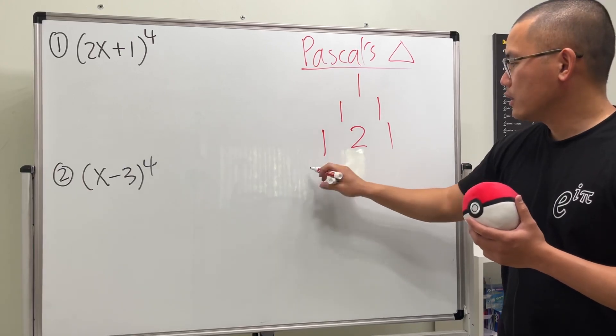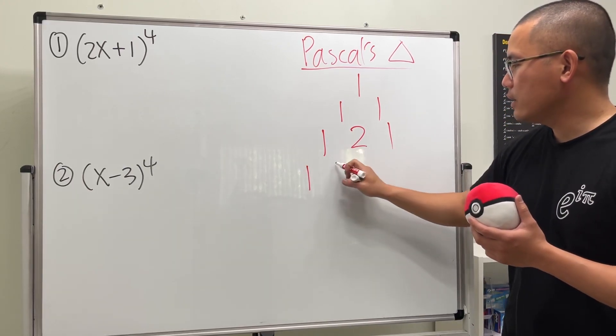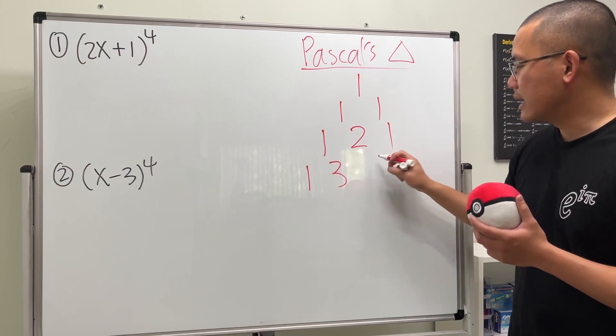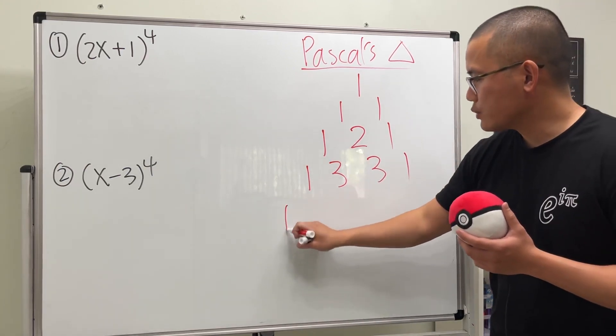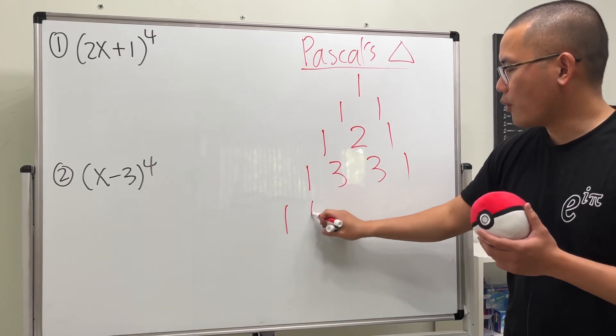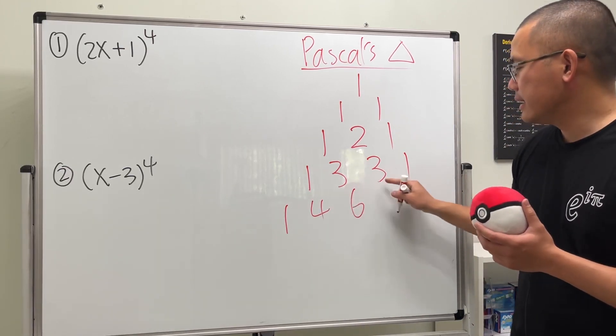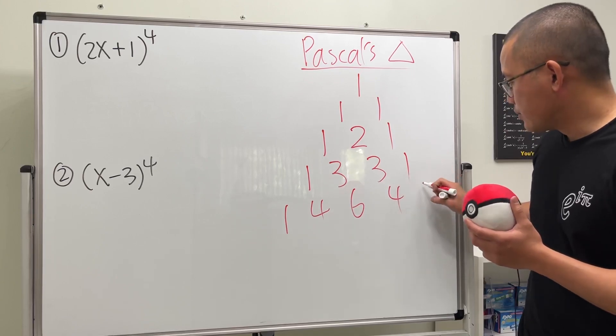And then we keep going. Again, start with one. And then we are going to add this and that. That will be three. And then this plus that is going to be three. And then we end with one. And then again, start with one. And then this plus that is four. And then this plus that is six. And then this plus that is four. And then this right here is one.